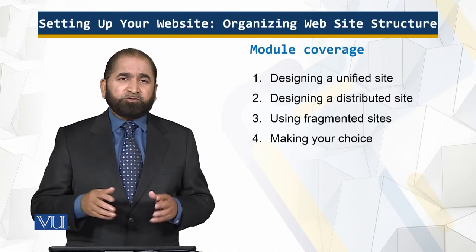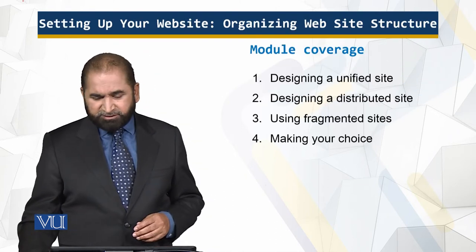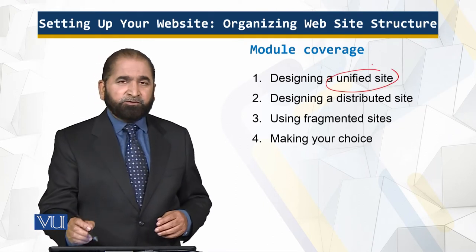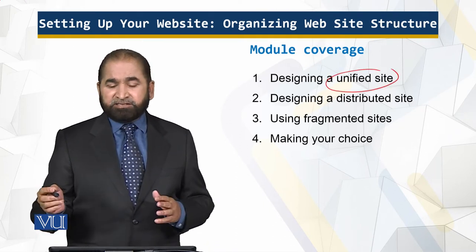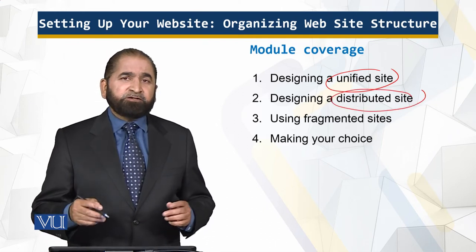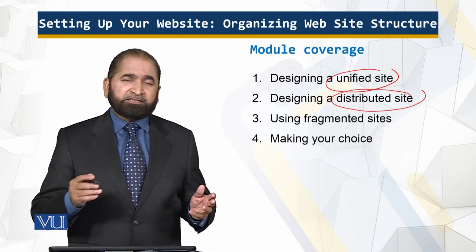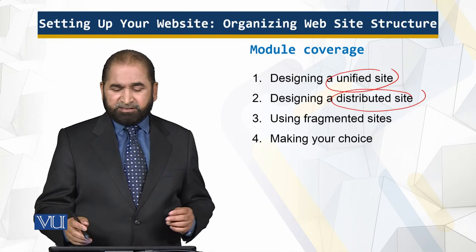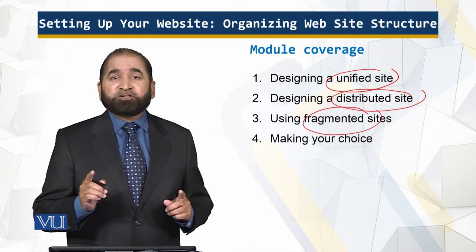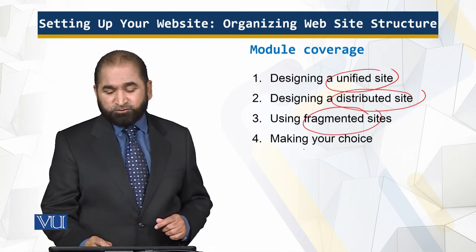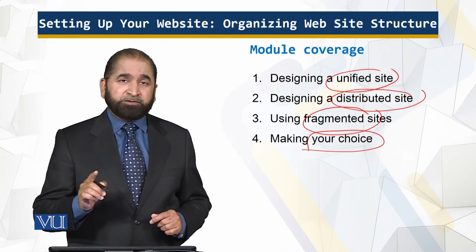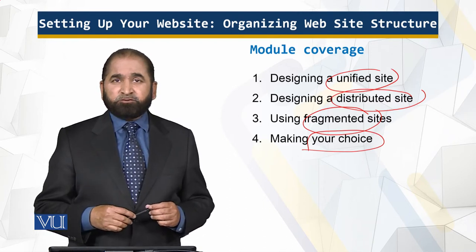So we look at some of the classical structures: the unified structure, repeating certain things, then the distributed site — of which there is some leverage — and of course fragmented sites. And then it is your choice: what do you want to do as a company, what do you want to do as an individual?